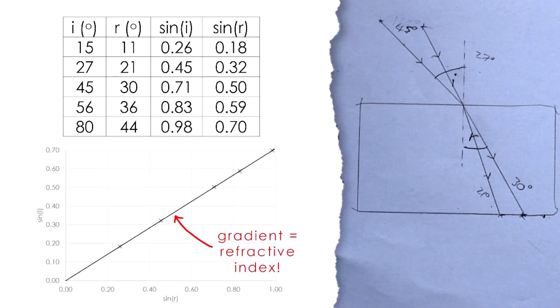Now what you want to do is find five angles of incidence and their corresponding angles of refraction. What you can then do is plot a graph of sine I against sine R, and that should give you a nice straight line graph. And the gradient of this will give you a much more reliable value for the refractive index.